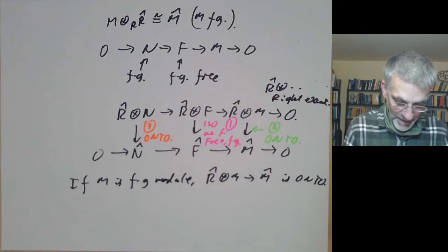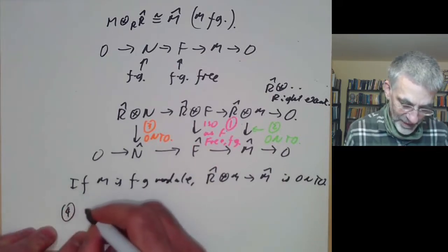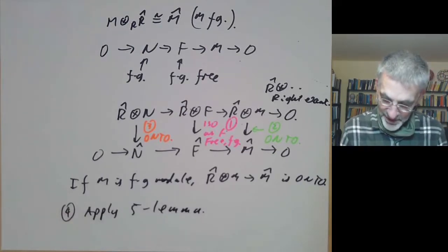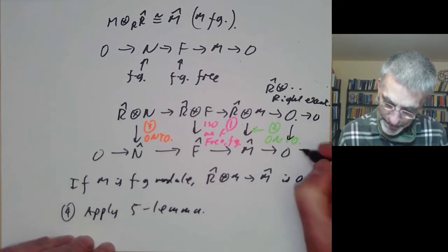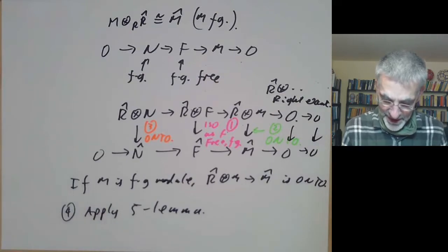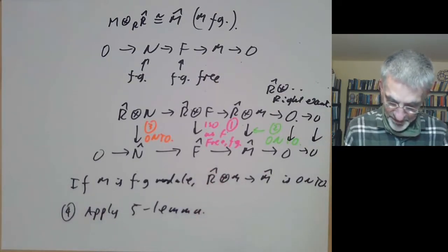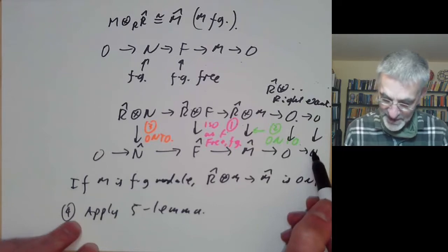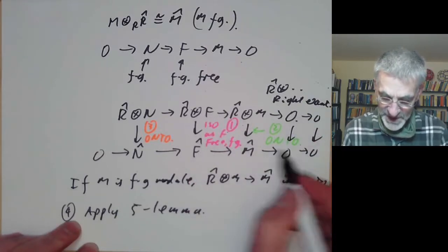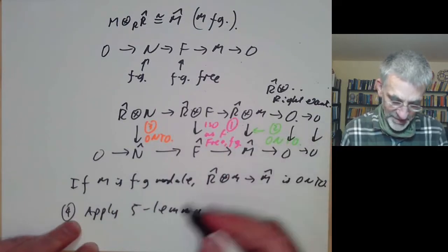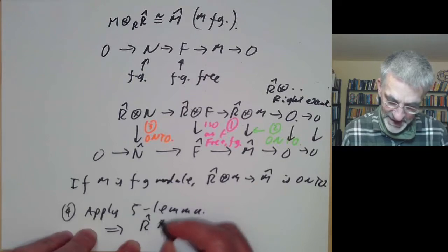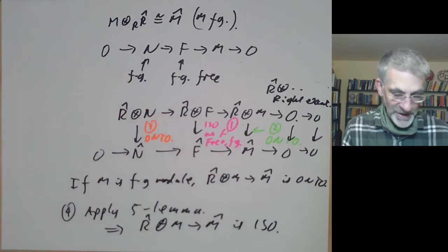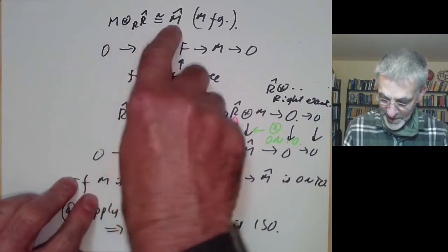Step four: apply the five lemma to the two sequences of five modules. Since F ⊗_R R̂ → F̂ is an isomorphism, N ⊗_R R̂ → N̂ is surjective, and the zero maps at the ends, the five lemma implies M ⊗_R R̂ → M̂ is an isomorphism. That completes the proof of the lemma: for finitely generated modules, M ⊗_R R̂ ≅ M̂.